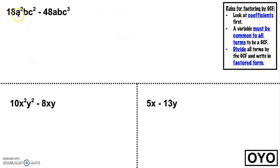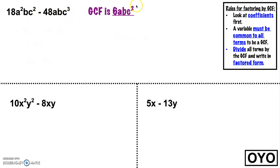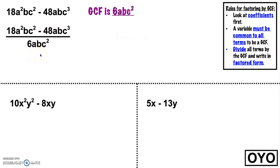Here we have 18a squared bc squared minus 48abc cubed. Look at the coefficients first — the largest number we could pull out of both 18 and 48 is 6. How many a's could we pull out of both? a to the first — if we tried to pull out a squared, we wouldn't have enough in the second expression. We can take out b to the first power. And we have enough to take out c squared from both terms. So the GCF is 6abc squared. Dividing that out leaves 3a minus 8c, giving us the factored form: 6abc squared times 3a minus 8c.